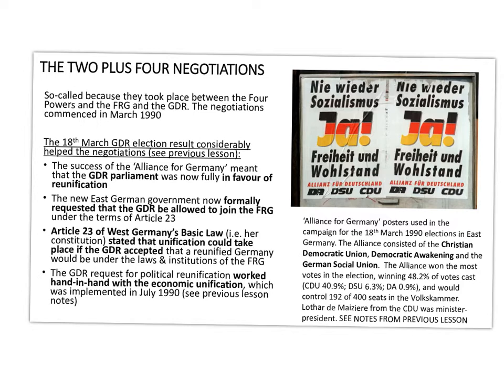The Alliance for Germany — the coalition where de Maizière led the CDU in East Germany alongside the Democratic Awakening and the German Social Union — won the most votes in the East German election with 48.2% and controlled 192 of the 400 seats in the Volkskammer, the East German parliament. De Maizière became Minister President. Those election results considerably helped the two-plus-four negotiations because the GDR parliament was now fully in favour of reunification.